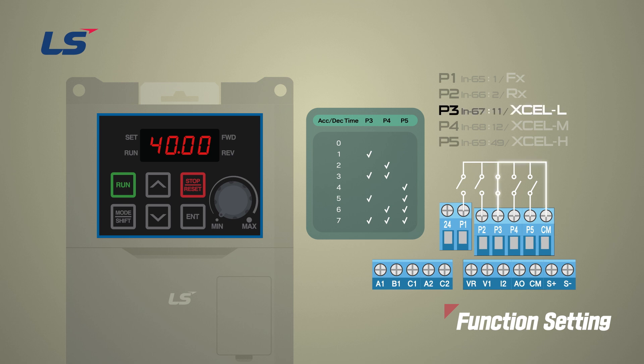For example, when the P3 terminal — XLL — and the P5 terminal — XLH — are both on, it is in fifth gear.